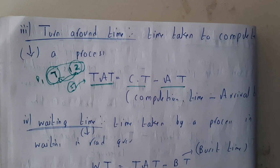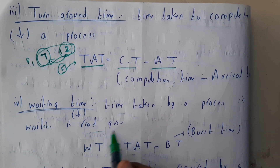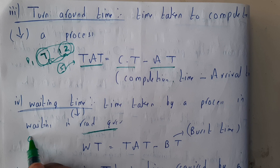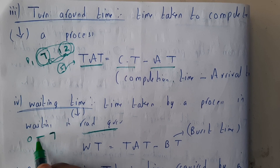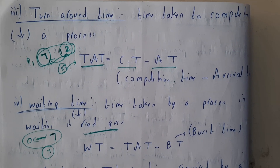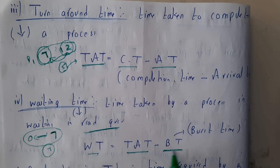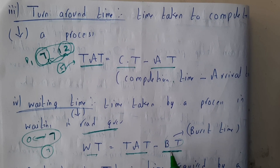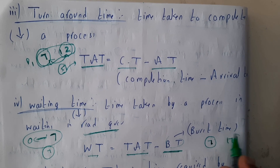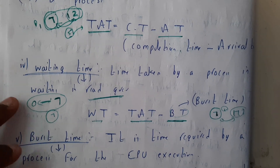Waiting time is the time a process spends waiting in the ready queue. For example, if a process arrives at 0 seconds and gets CPU execution at the 7th second, it waited 7 seconds. The formula is: waiting time = turnaround time minus burst time. If a process needs only 7 seconds but completes at 177 seconds, it wasted 170 seconds waiting.